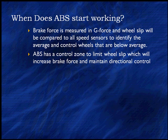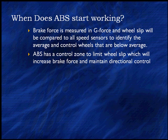We're going to measure brake force in G-forces — one G is the force of gravity. Wheel slip will be compared across all speed sensors to identify the average, and then control speeds that are below the average. ABS has its own control to limit wheel slip, which will increase brake force and maintain directional control. Limiting wheel slip increases braking G-forces as an end result, and we maintain directional control — we stop sooner with better control.